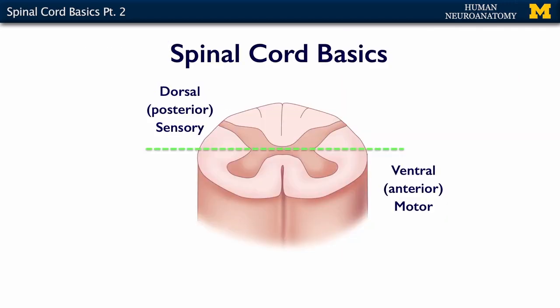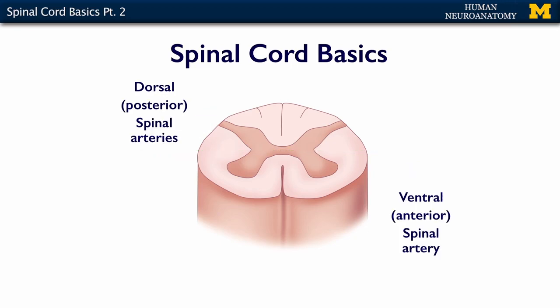Some more basic things about the spinal cord before we get into the details of gray and white matter: if you draw a line across it, the dorsal part of the spinal cord is sensory and the ventral part is motor — that's the general organization. You also have a blood supply for your spinal cord. There is one ventral artery that runs in the sulcus and sends out a corona of branches that feed the spinal cord, and you have two dorsal arteries that also branch and feed areas of the spinal cord.